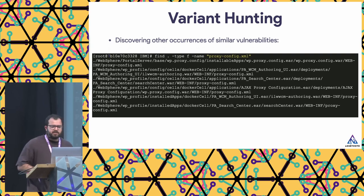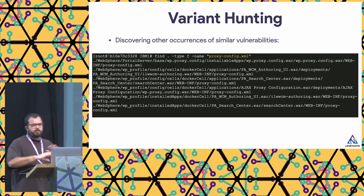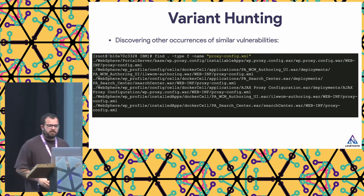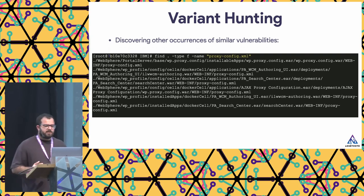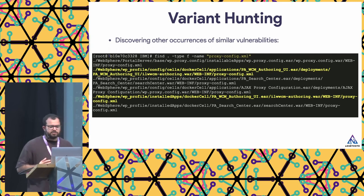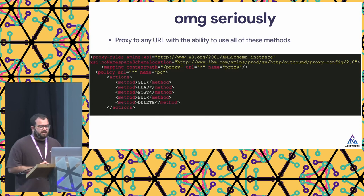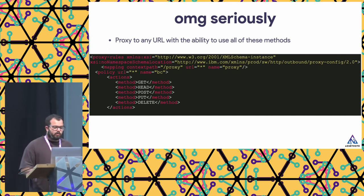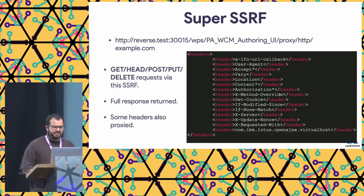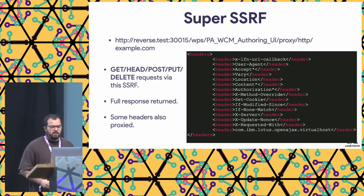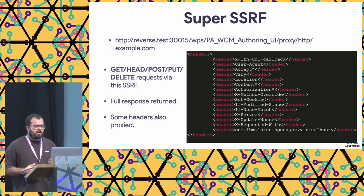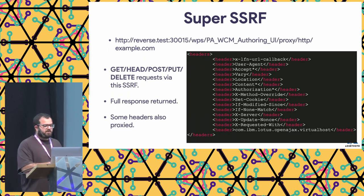When auditing enterprise software, you do variant hunting: once you've discovered one vulnerability and pattern, you try to find it across the entire codebase. If developers made a mistake in one location, it might be repeated elsewhere. For this vulnerability, we looked for all files called proxy-config.xml and found a number of them. Two in particular were extremely problematic — the first was essentially a proxy to any URL with support for GET, HEAD, POST, PUT, and DELETE methods — kind of like a super proxy. It also proxied all relevant headers with the full response returned, making it even more critical.